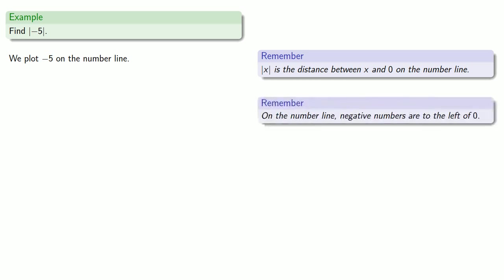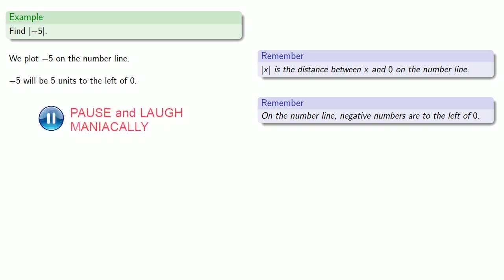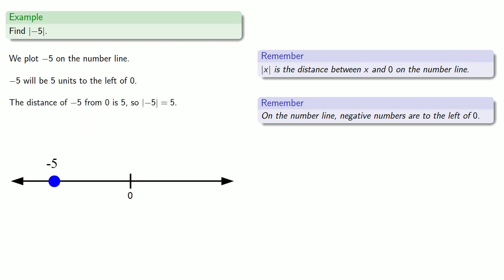Also, on the number line, negative numbers are to the left of 0. So negative 5 will be 5 units to the left of 0. Since the distance of negative 5 from 0 is 5, the absolute value of negative 5 is 5.